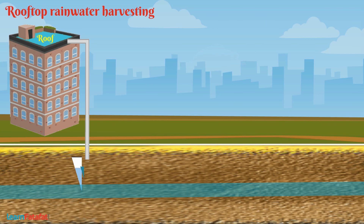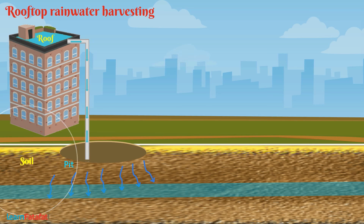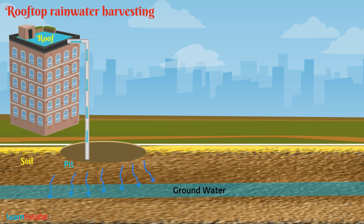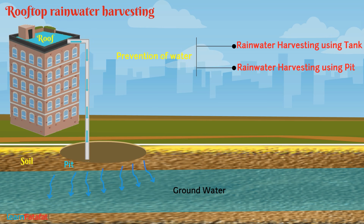Instead of a storage tank, water can also be transferred to a pit in the ground, from where it seeps into the soil. The seeped water gets added to groundwater, so the level of groundwater increases. In both ways, we prevent water from flowing away.